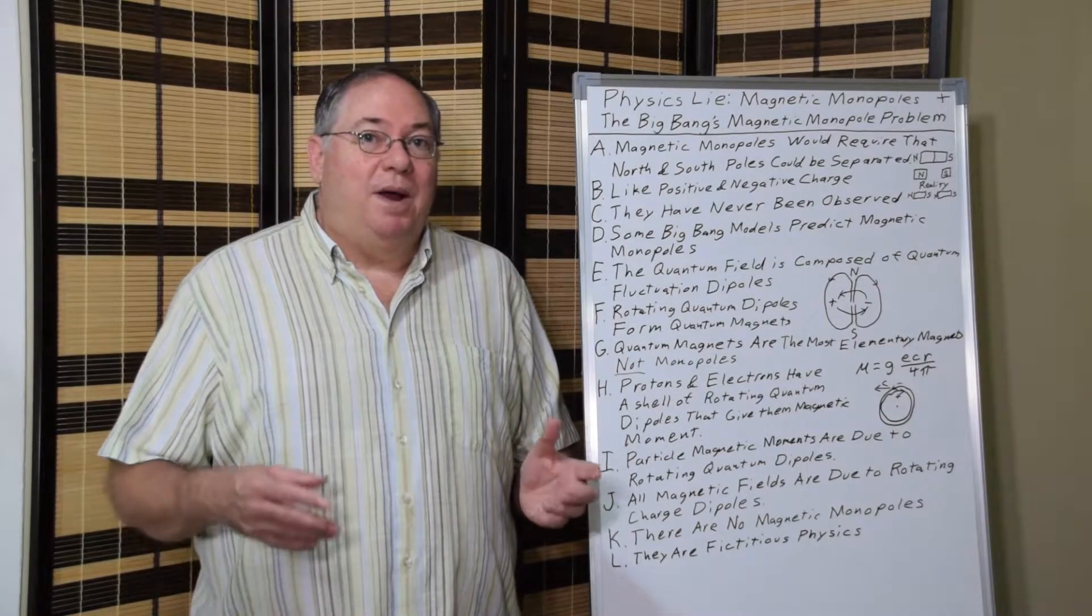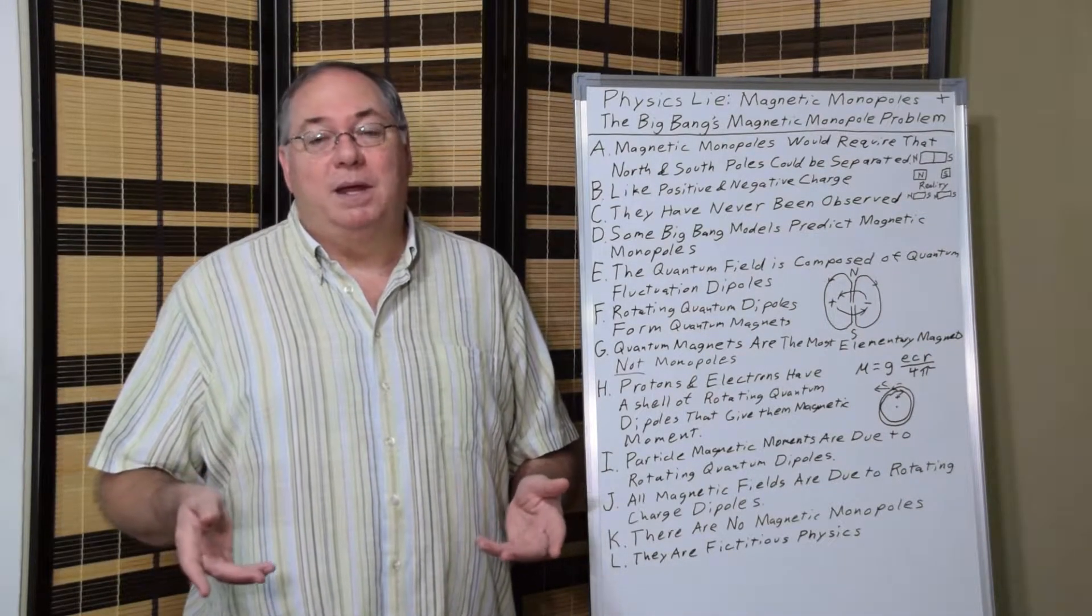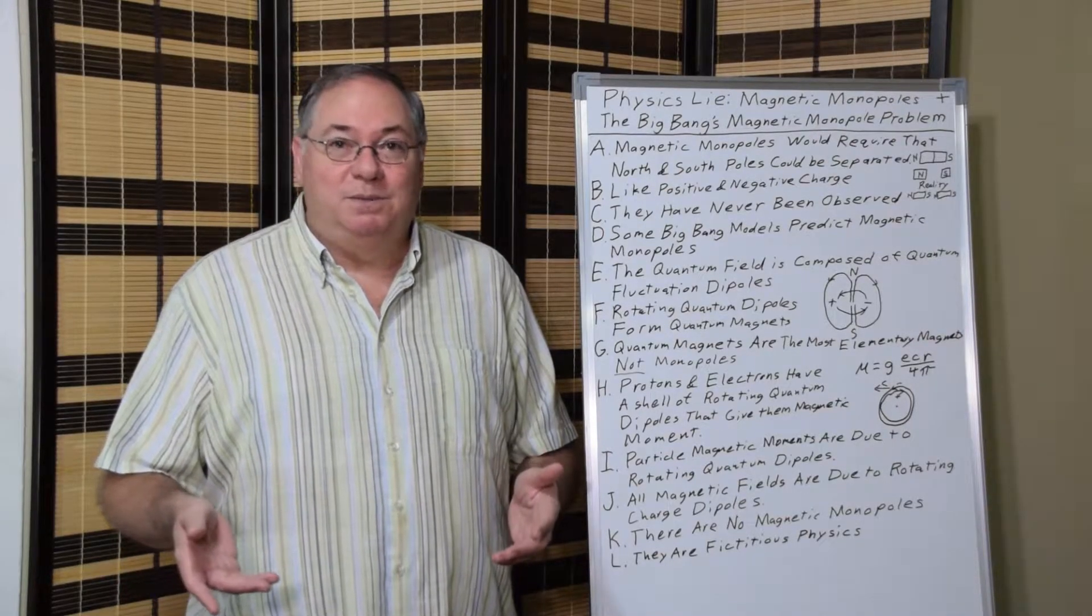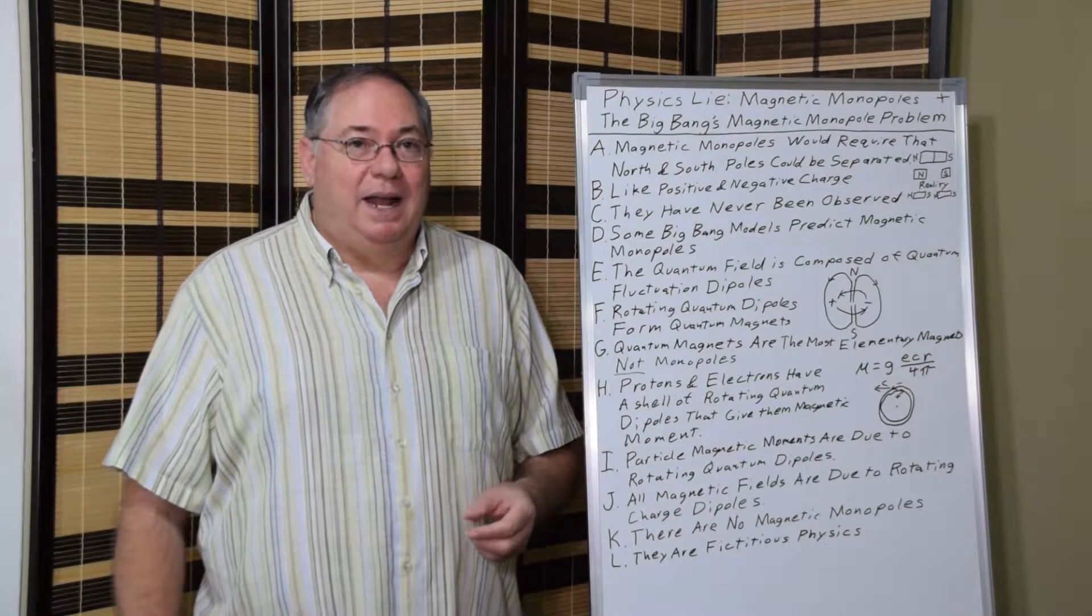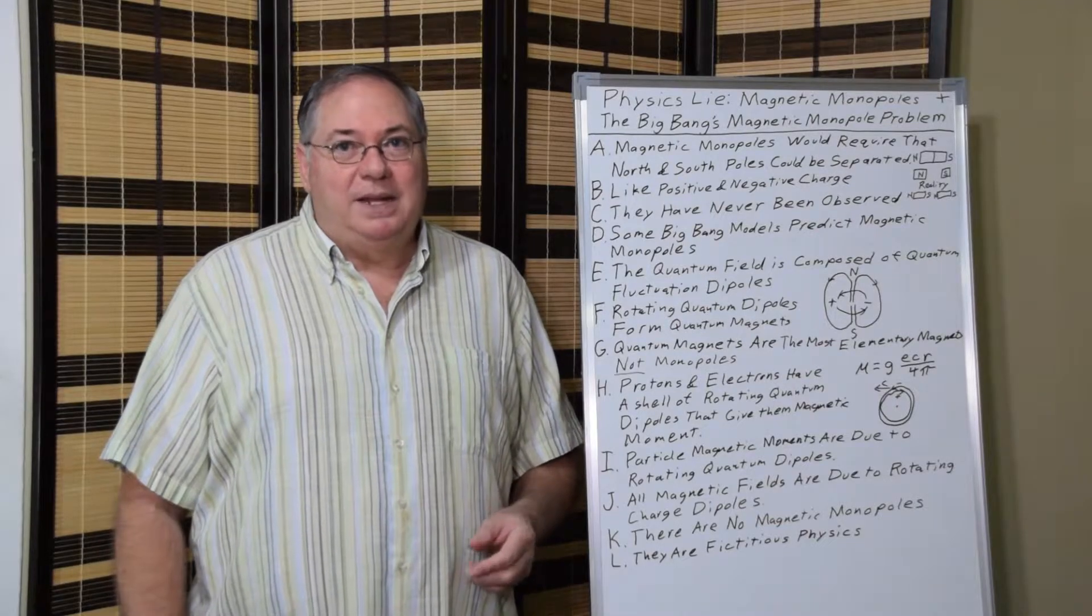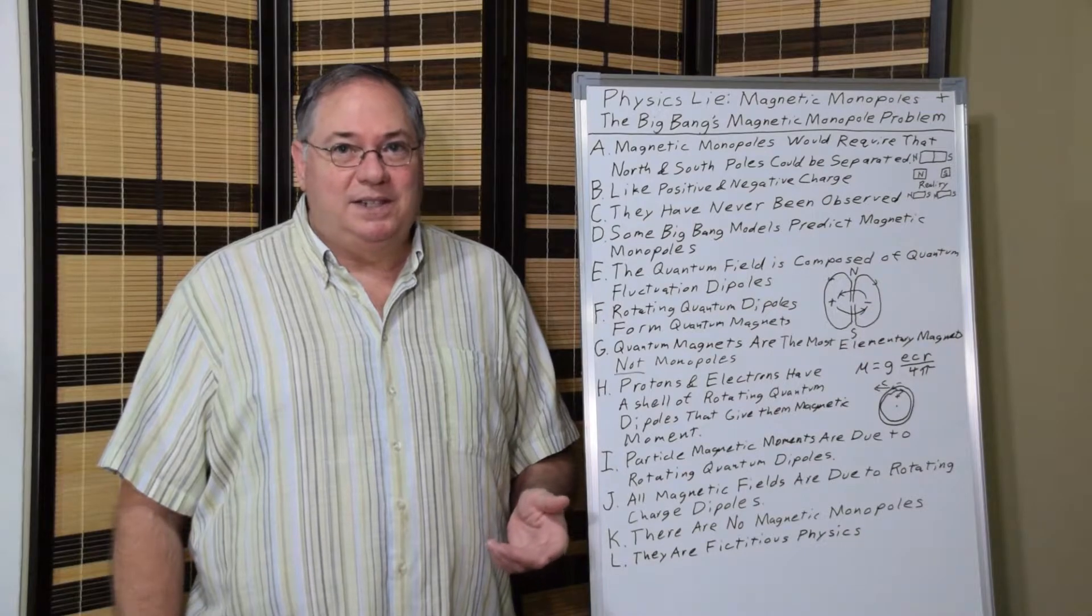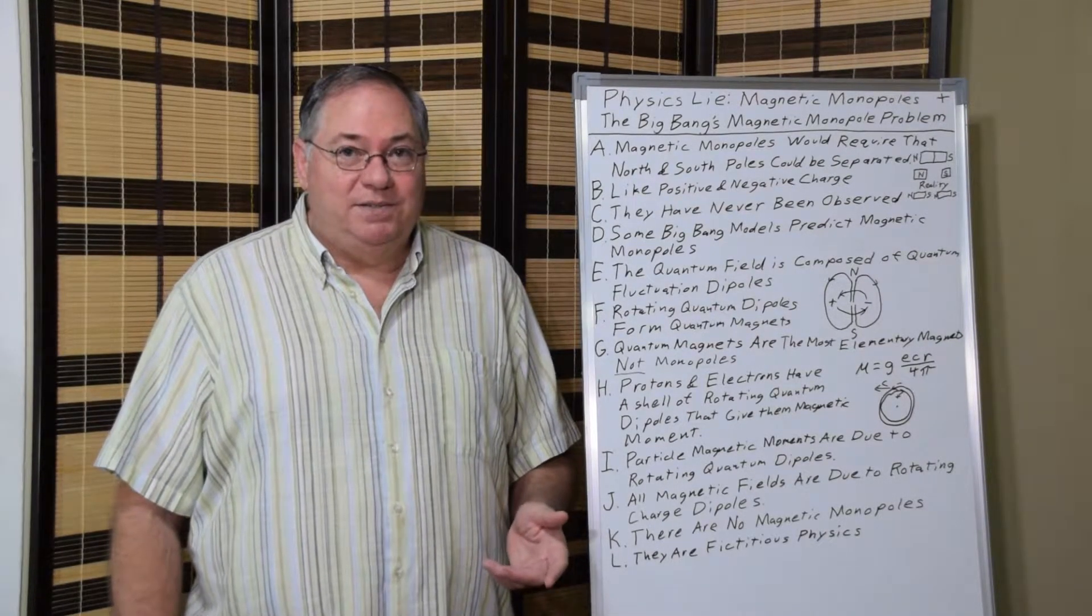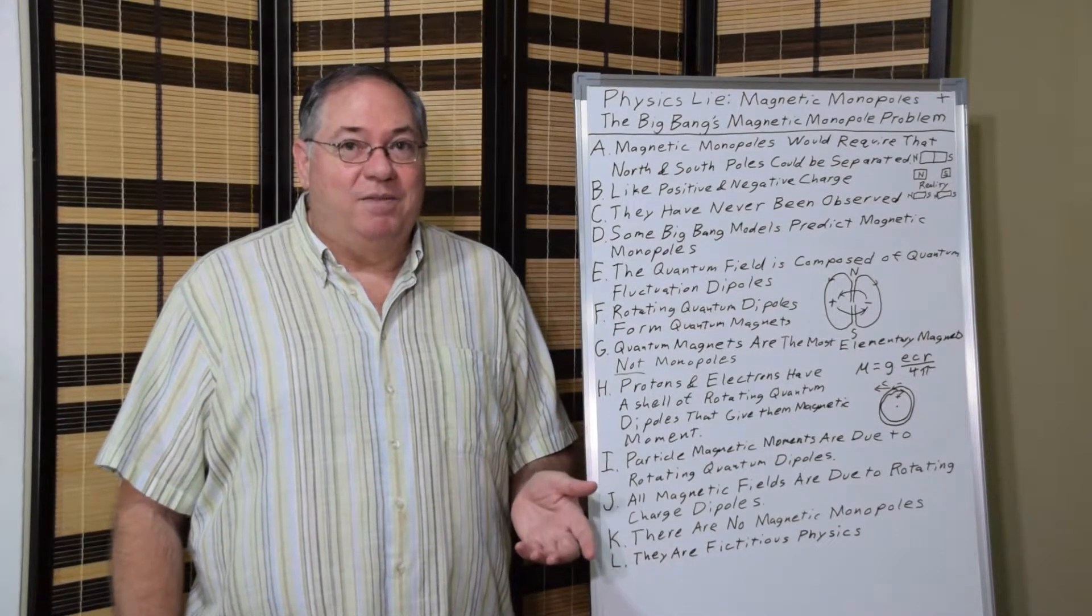And then we have the problem where some people who are trying to model the Big Bang predicted that magnetic monopoles would be produced after the Big Bang at some point. And because there aren't any magnetic monopoles, it screws up their theory. Well, that tells you it's a bad theory. If your theory includes fictitious physics, or even if you try to include fictitious physics into your theory, it's a fictitious theory, and you should get over it.